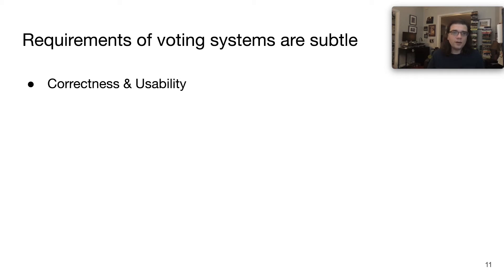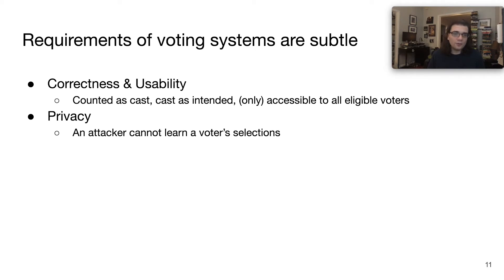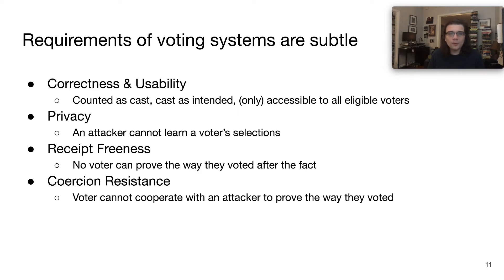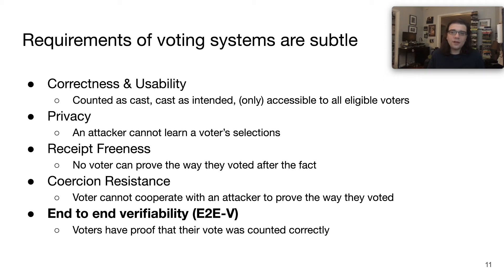The first two requirements are relatively straightforward: correctness and usability, which state that a vote is counted as cast, cast as intended, and accessible to all eligible voters. The second is privacy, which states that an attacker cannot learn a voter's selection. Then there's receipt-freeness, which states that a voter cannot prove the way they voted after the fact — this prevents vote selling. Then there's coercion-resistance, which states that a voter cannot cooperate with an attacker to prove the way they voted, so they can't be forced into voting a certain way. Finally, there's end-to-end verifiability, which has been the main focus of cryptography research — voters are given proof that their vote was actually counted in the final tally correctly. This is considered a prerequisite for internet voting, as it allows us to remove trust in the system's servers and other infrastructure.